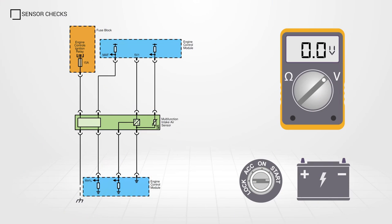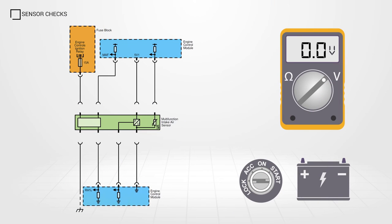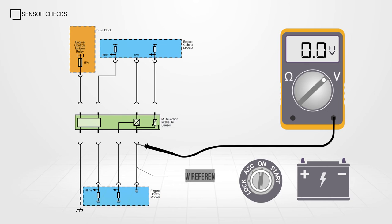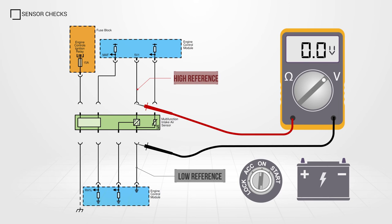With the ignition off, disconnect the multifunction intake air sensor. With the ignition back on and the meter set to volts, place the black test lead on the low reference terminal in the harness connector and the red on the high reference terminal.